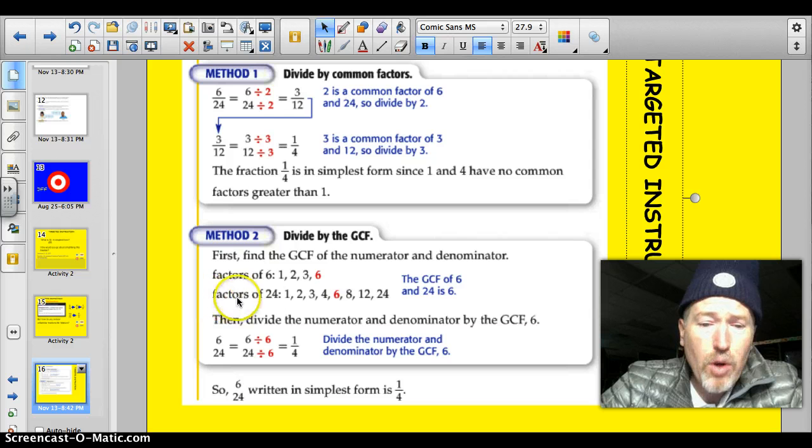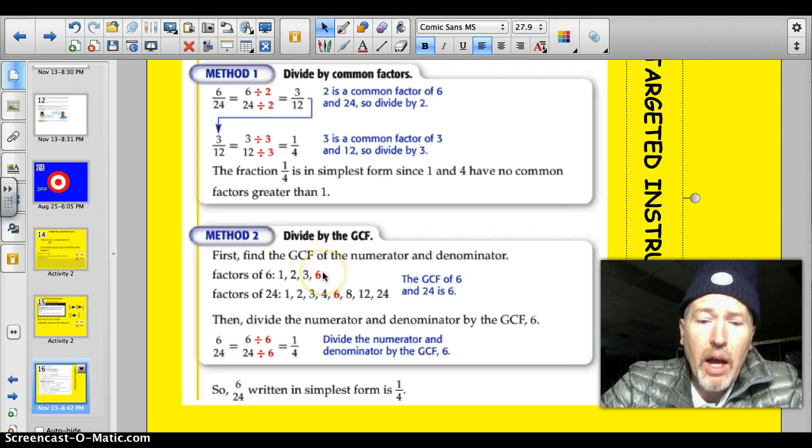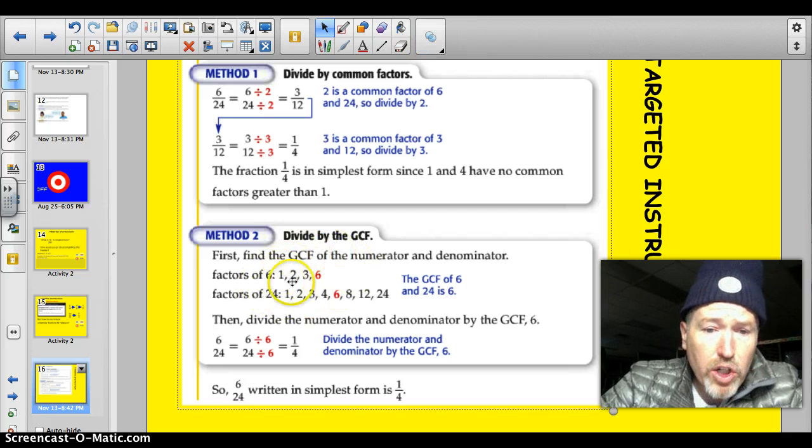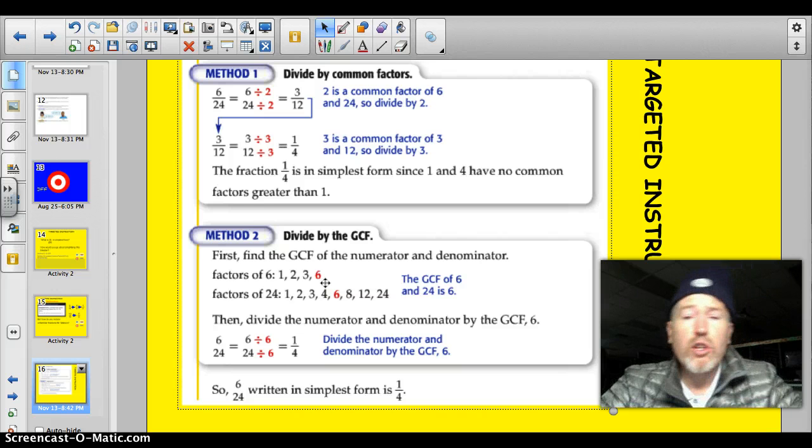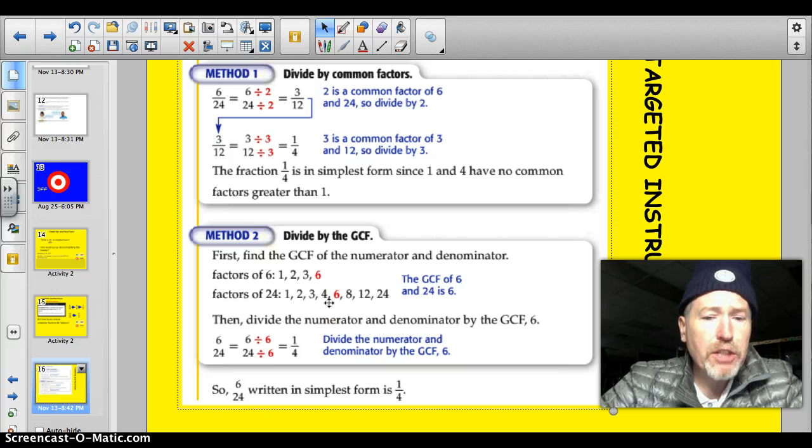A trick I use is I don't always factor the largest number. I just factor the smaller number. And I would ask myself, does 1 go into 24? Yes, it sure does. Does 2? It does. Does 3 go into 24? Yeah. Does 6 go into 24? Yes. 6 is my greatest common factor. When you get to the end of the line, asking that question on the factors of the smaller number, whichever number is largest will be your greatest common factor. I think it's a little more efficient and a little faster than factoring a multiple. But go ahead and do it either way.